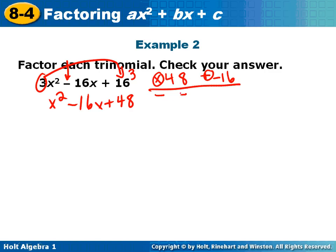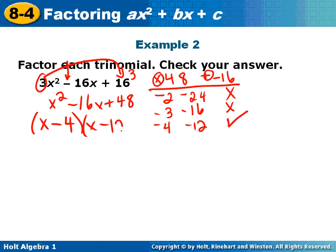So let's start at 2. 2 times 24 will not give me a 16. 3 times 16 is 48, but that does not give me a 16. Both negative. Negative 4 times negative 12 gives me 48. And guess what? It also gives me 16. So fill in your factors x minus 4 and x minus 12. The order there does not matter.